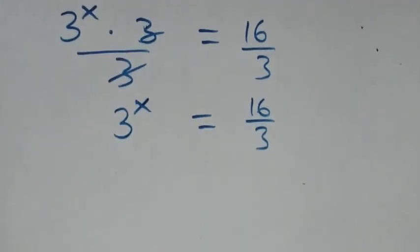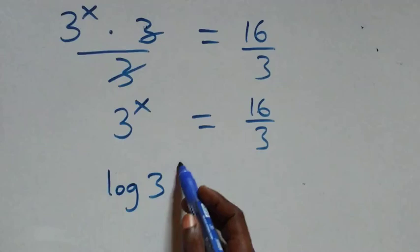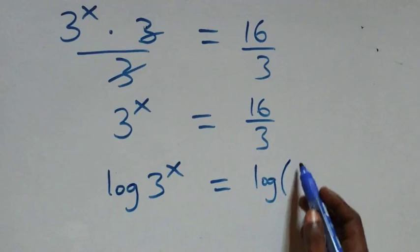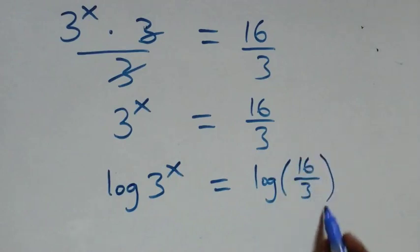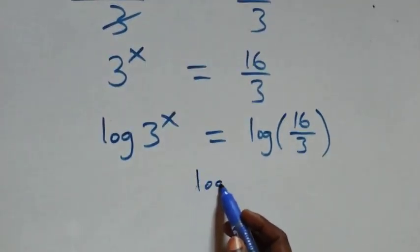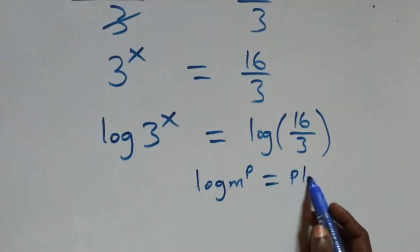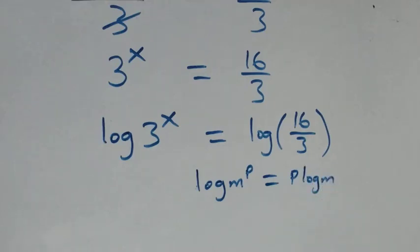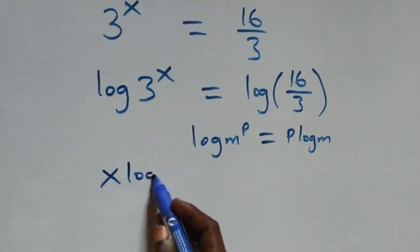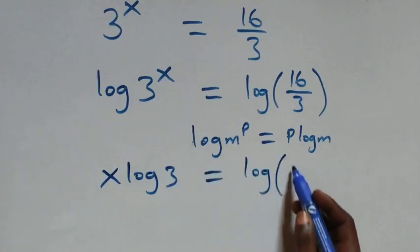The next step: we take the log of both sides. That is, we have log of 3 raised to πx equals log of sixteen over three. We apply the power rule of logarithms, where log of m raised to p is the same as p times log m. What we have becomes πx times log 3 equals log of sixteen over three.